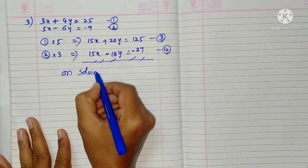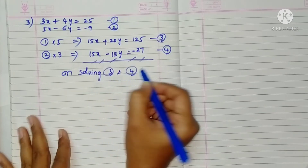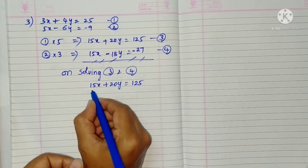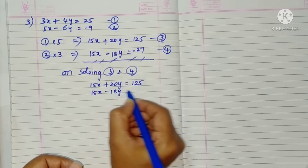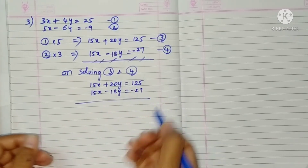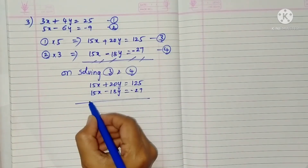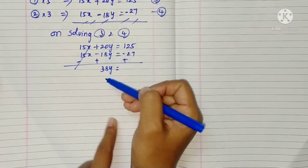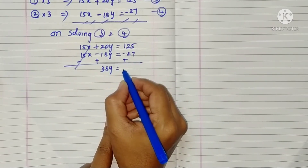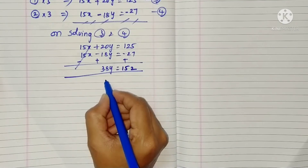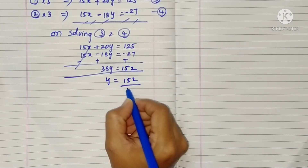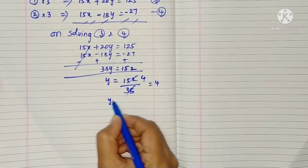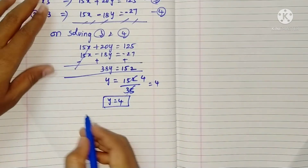This gives equation three: 15x plus 20y equals 125, and equation four: 15x minus 18y equals minus 27. On subtracting, the x terms cancel. 20y plus 18y gives 38y equals 152. So y equals 152 divided by 38, and since 38 fours are 152, y equals 4.